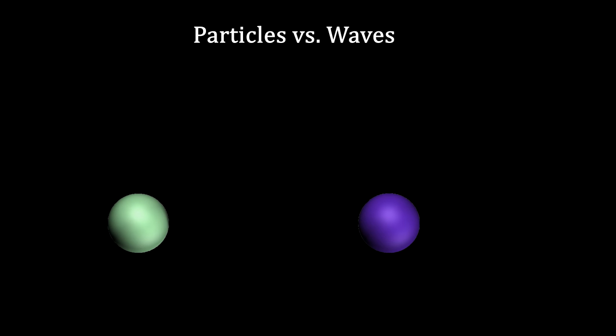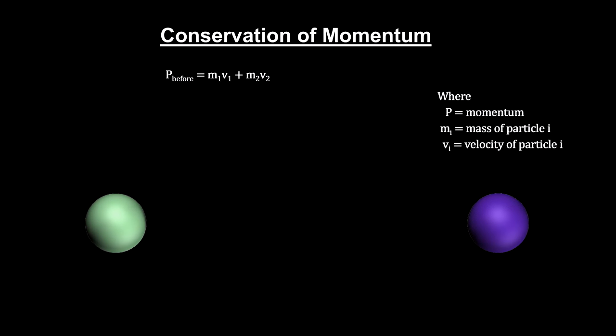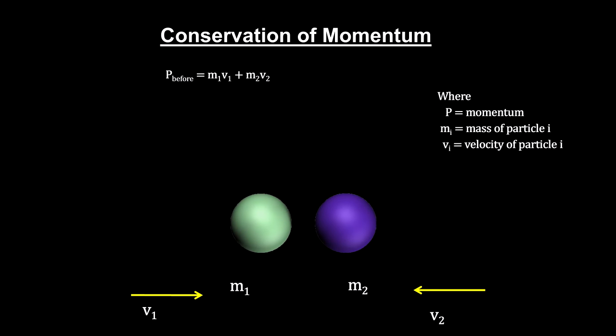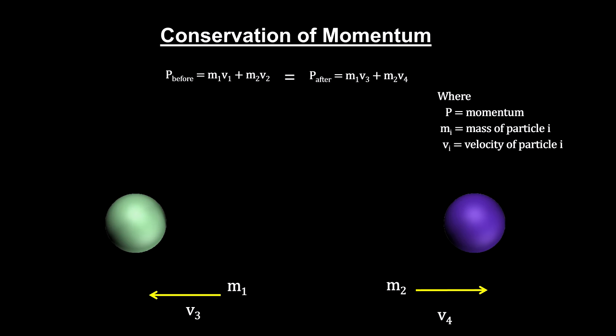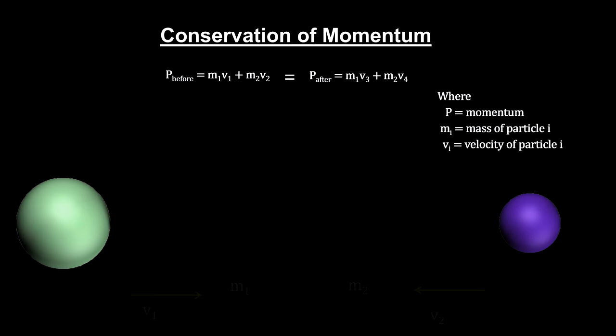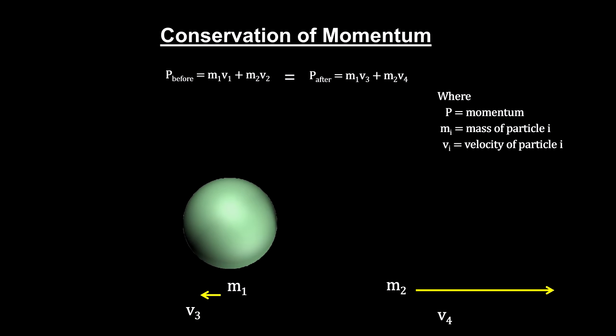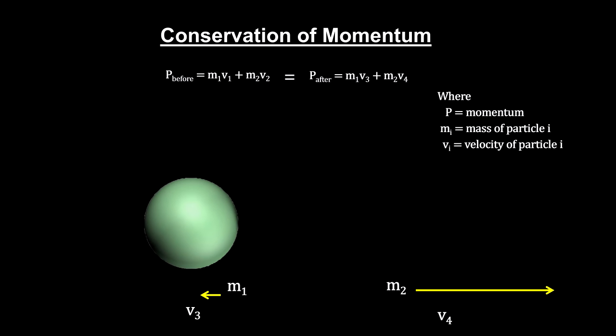Particles are localized and bounce off each other. An important aspect of collisions between particles like these is that the momentum of the system is the same before and after the collision. Momentum is the mass times the velocity. In nature, this quantity is conserved. We'll use this law of nature later on when we start colliding particles to see what happens.